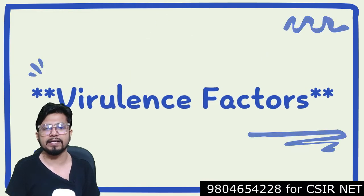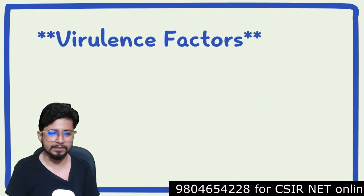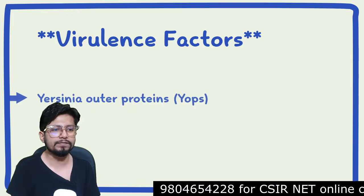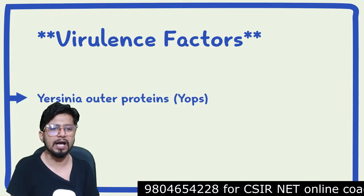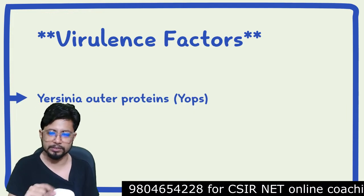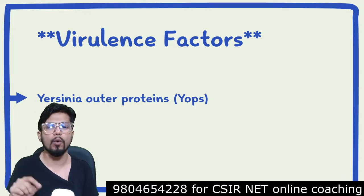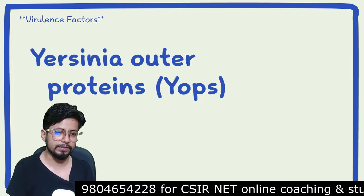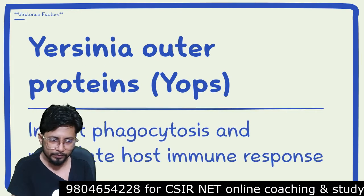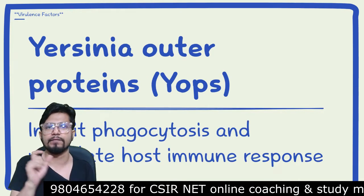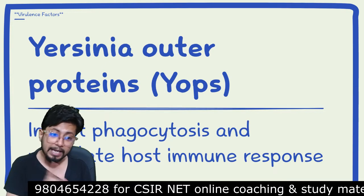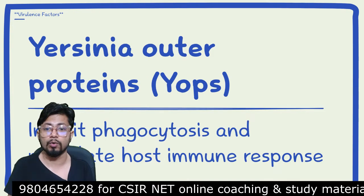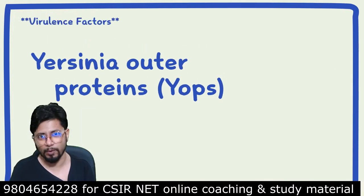Virulence factors of Yersinia pestis: the first are Yersinia outer proteins, known as YOPs. The job of YOPs is to inhibit phagocytosis and modulate the host immune response.